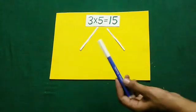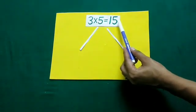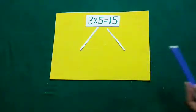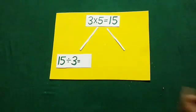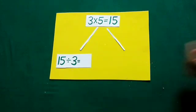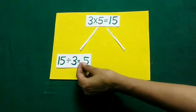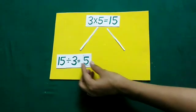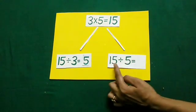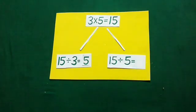Now, we are given 3 multiplied by 5 is equal to 15. Now students, from this we will write 2 facts of division. First is 15 divided by 3 is equal to, yes students, what will be the answer? Very good, the answer is 5. Second fact is now divide 15 with 5 and the answer will be 3.